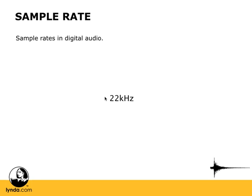Now let's check out something at a lower rate at 22K. At 22K, we're actually taking half as many samples, so we're getting half as much information, and we obviously won't have as accurate a representation of the sound. Finally, at 8K — hopefully it's easy to hear there's a big difference in quality between 8K and 22K, and even more of a difference between 8K and 44.1 kHz. At 8K, we're taking more than five times fewer samples than at 44.1 kHz, and the sound is noticeably not as good.